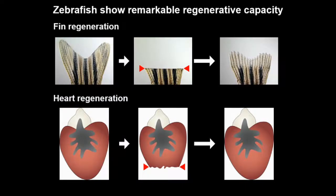As we know, we humans cannot regenerate multiple tissues. But zebrafish show remarkable capacity. Zebrafish can regenerate their fin after amputation within two weeks. Zebrafish also can regenerate their heart — after ventricular resection of 20%, zebrafish can regenerate their heart within two months.